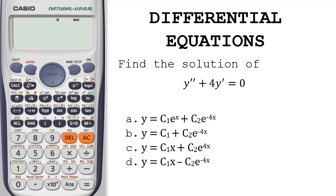Find the solution of y double prime plus 4y prime equals 0.